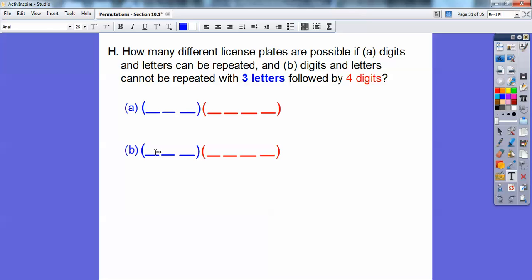Here, when they don't repeat, it's going to be 26, and then I can't repeat that letter so there'd be 25 left, and then I can't repeat that letter so then 24. And then this would be 10, 9, 8, 7 because I cannot repeat them. So there's that one, and I get that big old fat number: 175,760,000.